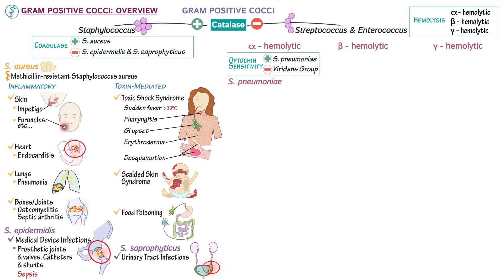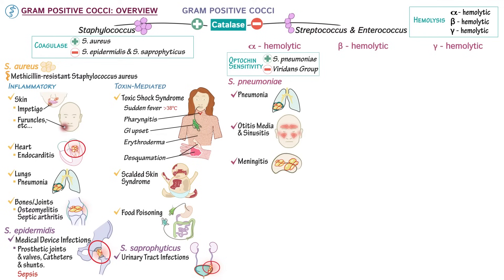Streptococcus pneumoniae is associated with pneumonia, otitis media, sinusitis, and meningitis. Viridans group streptococci are associated with subacute endocarditis and dental caries, as well as some other infections not listed here.